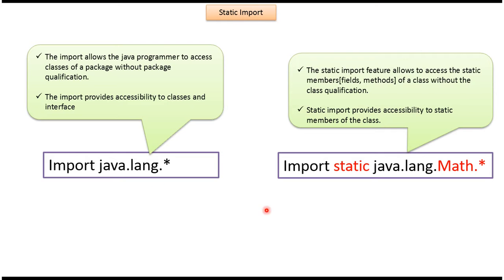On the left side you can see import, and on the right side you can see static import. Import java.lang.* means whatever classes and interfaces which are there inside the java.lang package we can access without package qualification. Import static java.lang.Math.* — here java.lang is the package, inside this package we have the Math class, and .* meaning whatever static fields and static methods which are inside the Math class we can access without class qualification.